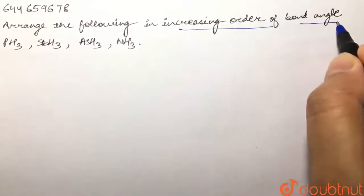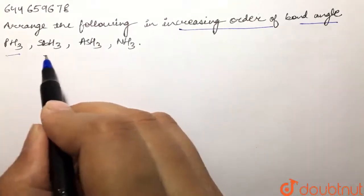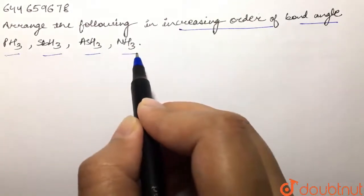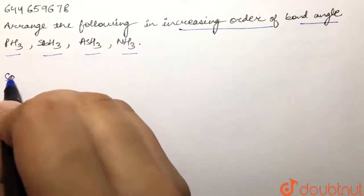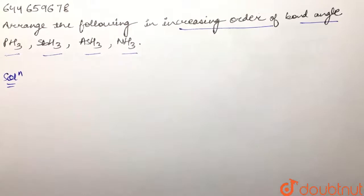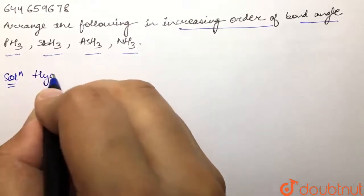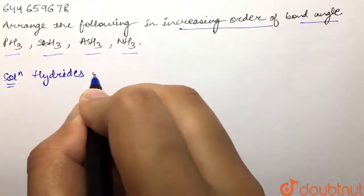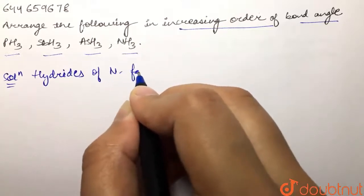In increasing order of bond angle, we are given PH3, SbH3, AsH3, and NH3. These are basically the hydrides of nitrogen family.